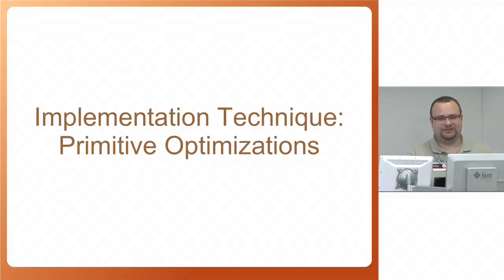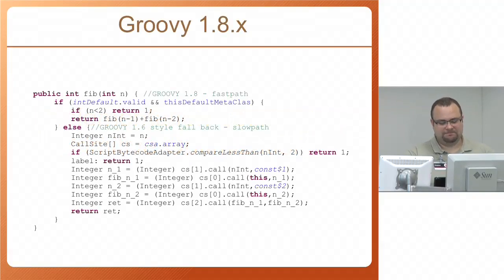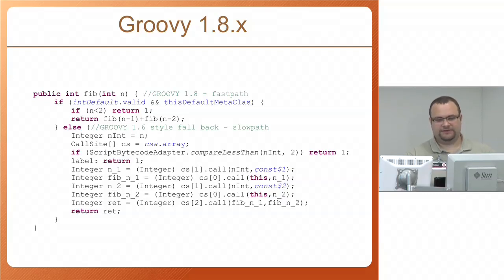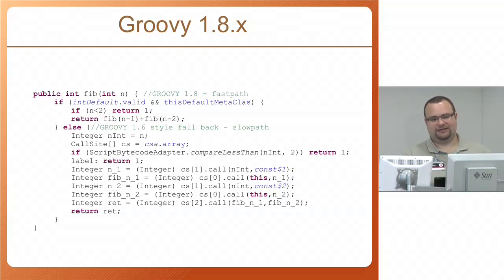Two years ago I hinted at a technique I call primitive optimizations, and last year I implemented it. The idea is that you compile in a fast path and a slow path. The fast path is guarded by some booleans — unsynchronized booleans, actually, so I'm stretching the Java memory model here. It can happen that one thread sees a change and another thread will not. But we decided to change the language semantics so this is acceptable.